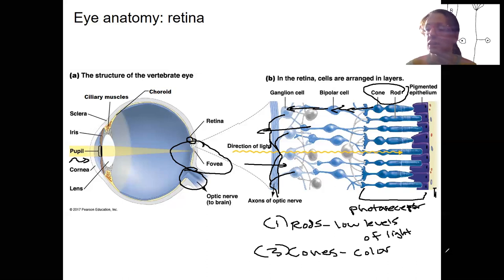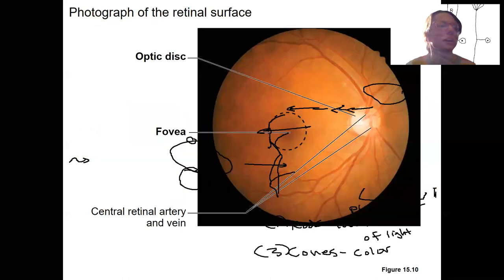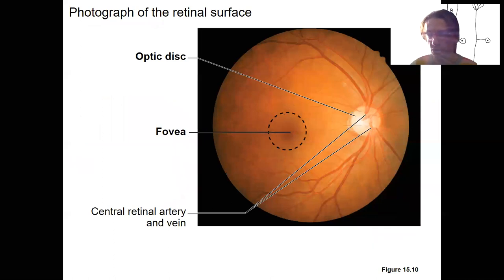This is a photograph of the retinal surface. You get one of these if you go to the eye doctor where you can actually see a picture of the fovea. It's on this dark spot right here. It's a high concentration of cones.